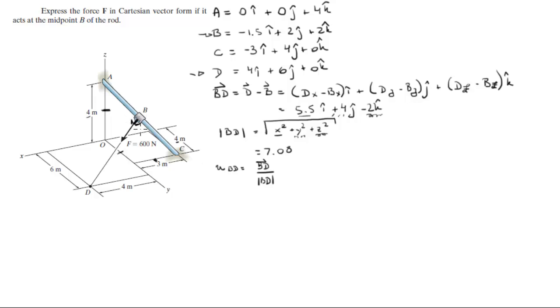And that unit vector, dividing these three values by this 7.08, it's gonna give you 0.777 in the i plus 0.565 in the j minus 0.282 in the k.